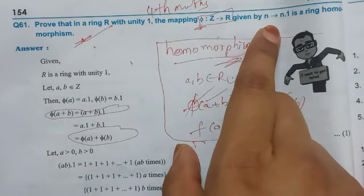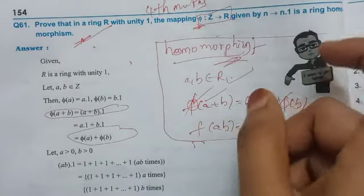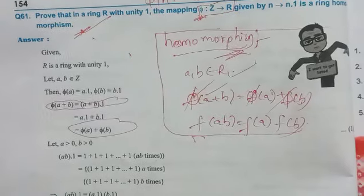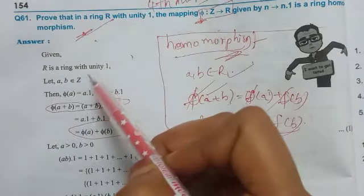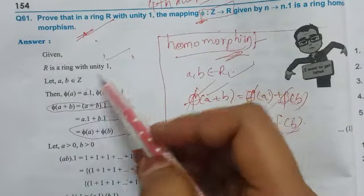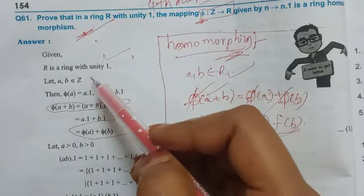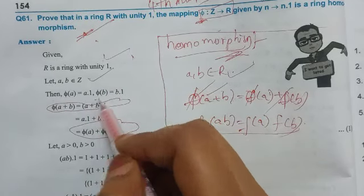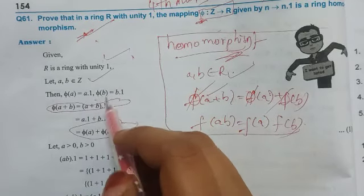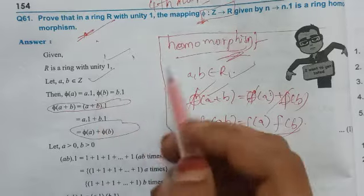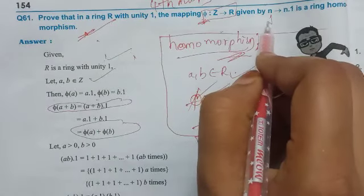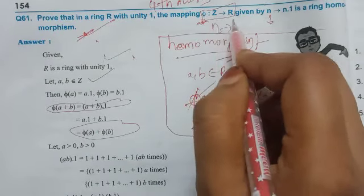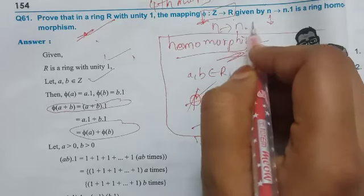We will prove that the definition maps n to n.1. First, let R be a ring with unity 1, and let a, b belong to Z. Then phi of a is equal to a.1.